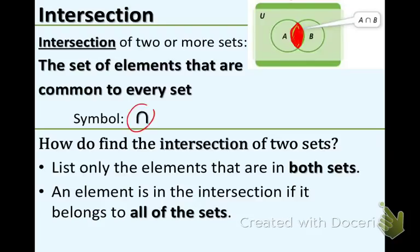Now, for the symbol of intersection, we use an upside-down U. And how do we find the intersection of two sets? Well, first of all, you list only the elements that are in both sets, like I said before.